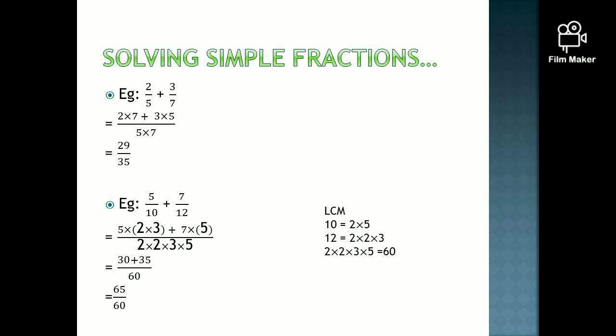Take the numerator — the first term is 2. We have to multiply 2 into... The denominator of 2 over 5 is 5. Cover 5 from 5 into 7. The remaining term is 7. Then multiply 2 with 7.